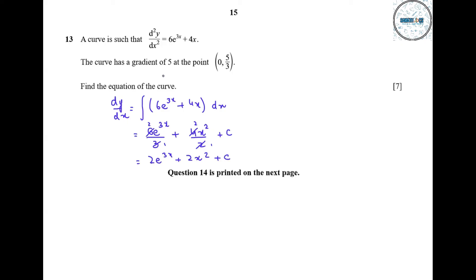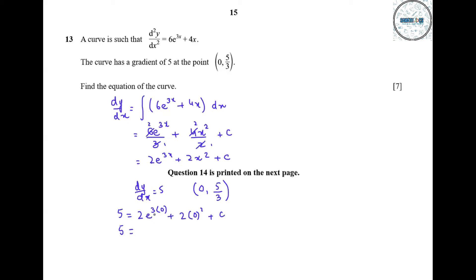The curve has a gradient of 5 at the point (0, 5/3), meaning dy/dx equals 5 when x equals 0. Substituting: 5 equals 2e^(3×0) plus 2×0² plus c. Since e^0 equals 1, we have 5 equals 2 plus c, so c equals 3.